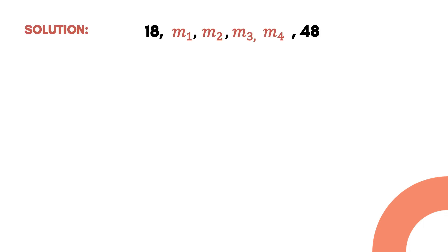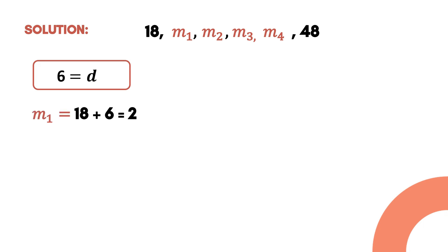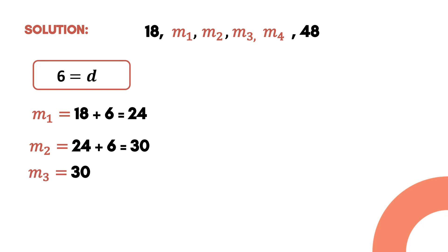Now we solve for the 4 arithmetic means using the common difference of 6. For m₁, we add the first term and the common difference: m₁ = 24. For m₂, we add m₁ and the common difference: m₂ = 30. For m₃, we add m₂ and the common difference: m₃ = 36. For m₄, we add m₃ and the common difference: m₄ = 42.